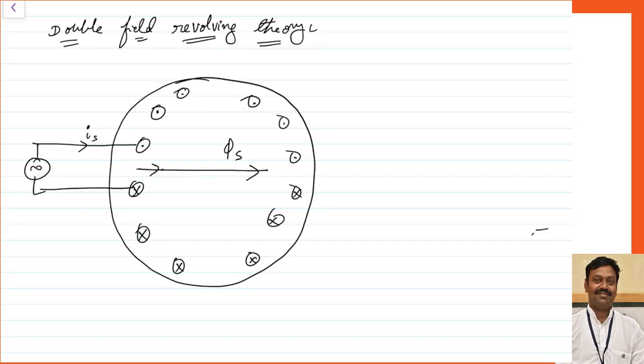Let us take the same setup as in the last class. I have taken conductors in the stator. Let us assume I have applied my single phase supply. The current will pass through the stator, with dots in the upper part and crosses in the lower part. If you apply the right hand thumb rule, you will get the direction of the main field flux and this is the axis of your field — this is your stator axis.